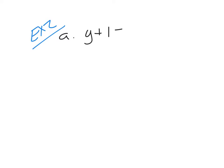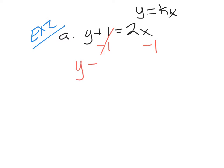Now let's look at equation form — example two. For part A, we have y plus 1 equals 2x. Is this in direct variation form? Remember, direct variation form is y equals kx. This is not currently in that form, so we need to solve for y. I subtract one from both sides, which leaves y equals 2x minus 1. Looking at this, is it direct variation? No, because this means it doesn't go through the origin. So this would be not direct variation.